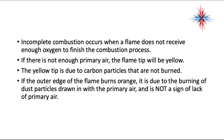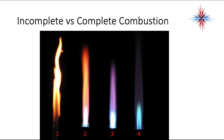Incomplete combustion occurs when a flame does not receive enough oxygen to finish the combustion process, and it's pretty dangerous. If there's not enough primary air, the flame tip will be yellow — due to carbon particles that are not burned. If the outer edge of the flame burns orange, it is due to dust particles drawn in with primary air; that is not a sign of lack of air. Yellow tips are the sign of lack of air. So we have incomplete combustion versus complete combustion: number one is a bad flame, number two is a bad flame, number three is okay, and number four is perfect combustion.